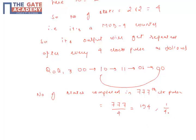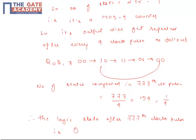So the logic state after 777 clock pulses is Q0 Q1 equal to 10, which is our answer C.